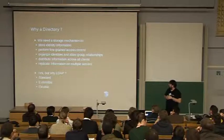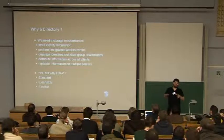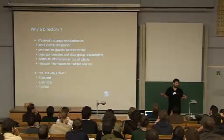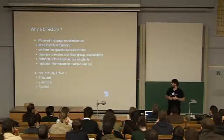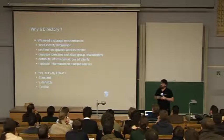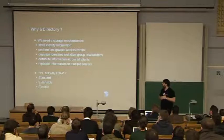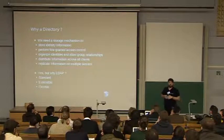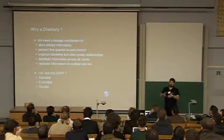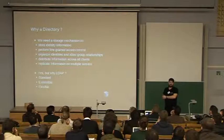We also need to distribute information across clients, and LDAP is really good at that — it was built exactly to distribute information, and can do so very efficiently. It's efficient for reads, less so for writes, but that's not important because the main task for an LDAP server is to distribute information. And to avoid a single point of failure, you really need to be able to replicate information on multiple servers, so that if your main server goes down, clients can immediately connect to another server.